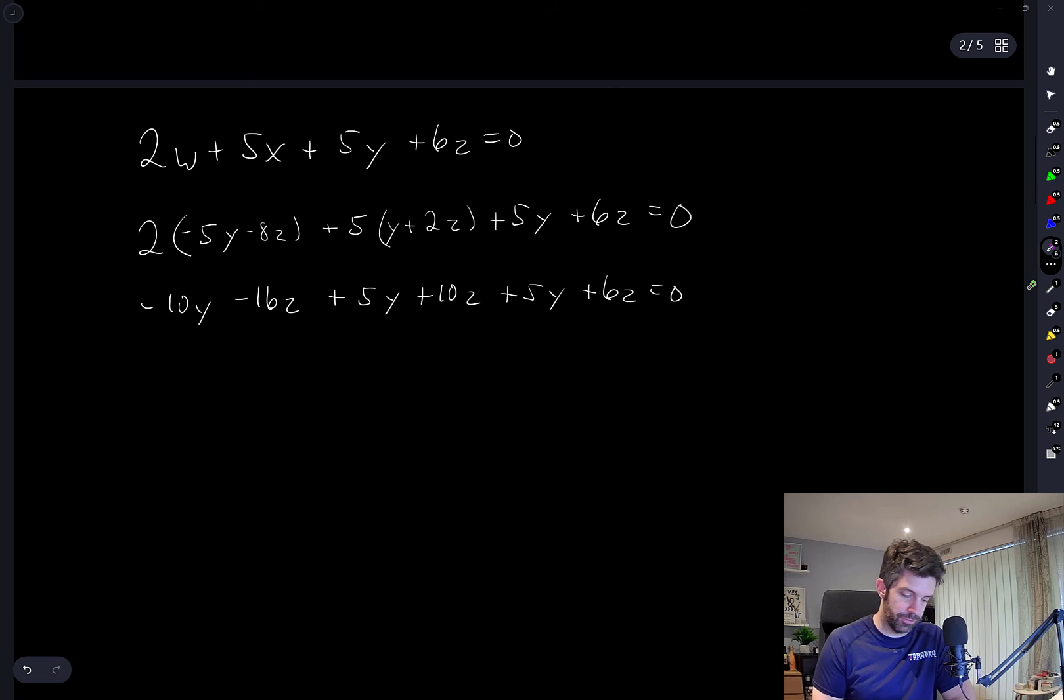So if you look at this again and look at the coefficients on Y and Z, negative 10 plus 5 plus 5, so we have zero Y. Negative 16 plus 10 plus 6, again gives zero Z. We get another zero equals zero.